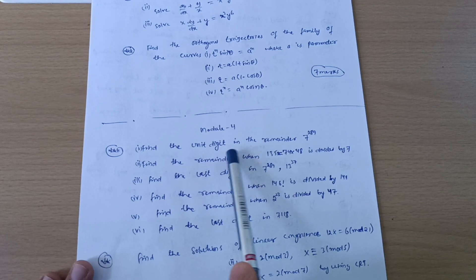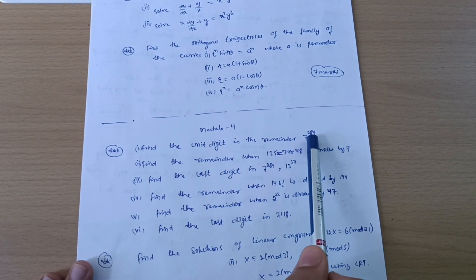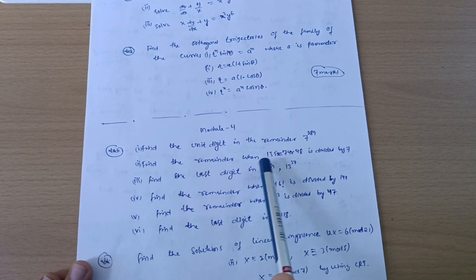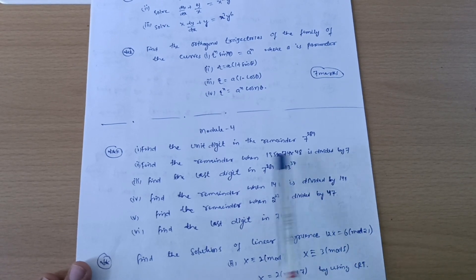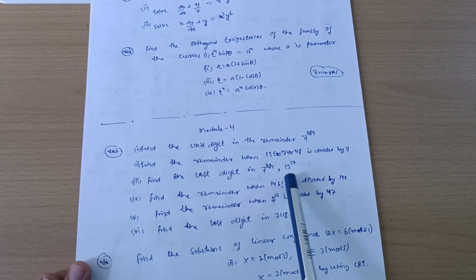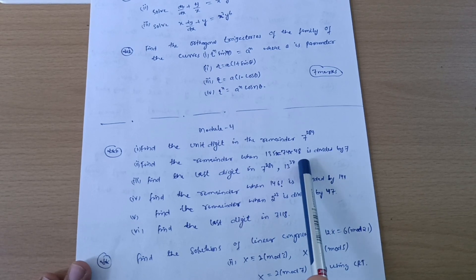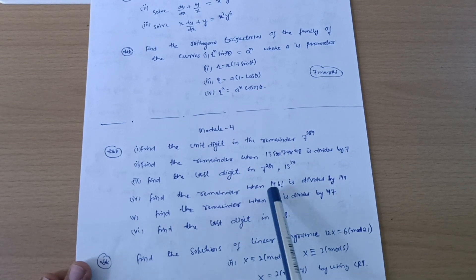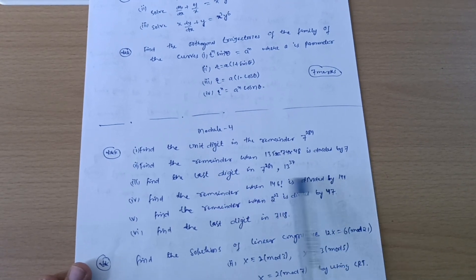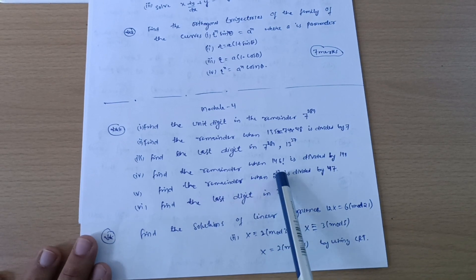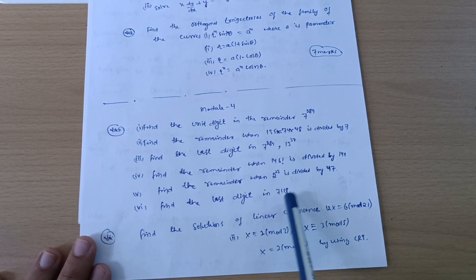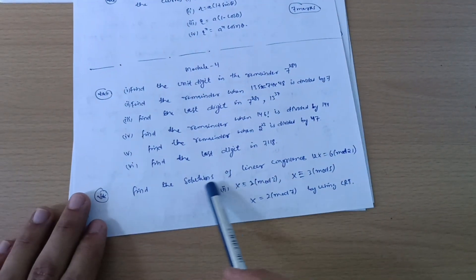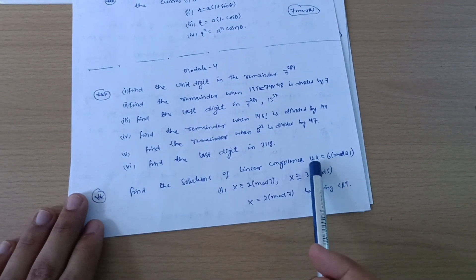Now we have module four. Some questions are here which you should go through. Find the unit digit in the remainder 7 raise power 289. Find the remainder when 135 is equal to 74 times 48 is divided by 7. Find the last digit in 7 raise power 289, 13 raise power 37. Find the remainder when 146 is divided by 149. Find the remainder when 2 raise power 23 is divided by 47. Find the last digit in 7118.